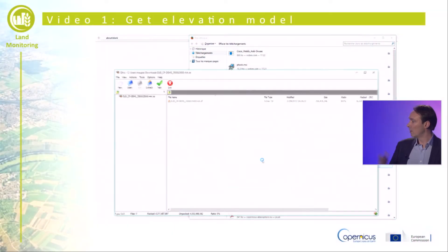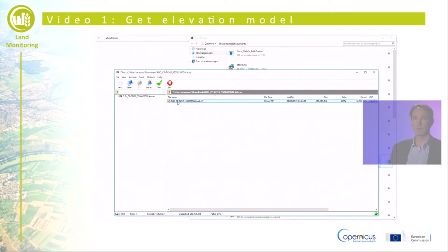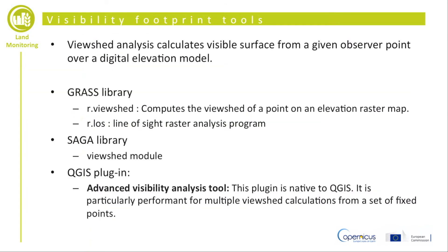Now we have downloaded the dataset and we are going to decompress it to see the file. You just have to open the decompressed data in the WinRAR file. To delineate the zone of visual influence and the visibility footprint of the windmills, I propose to use the viewshed analysis, which is a common function of most GIS software.